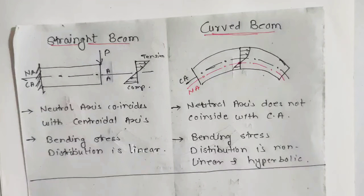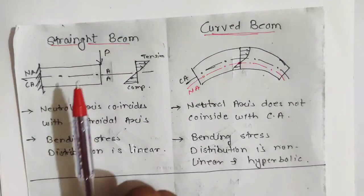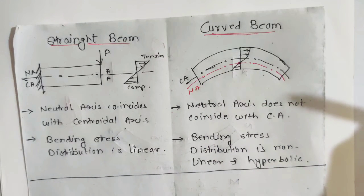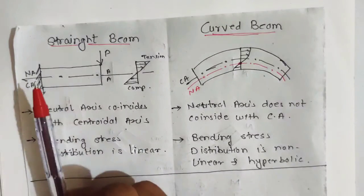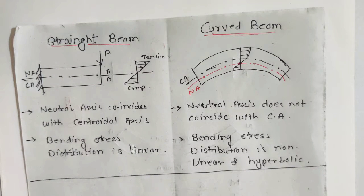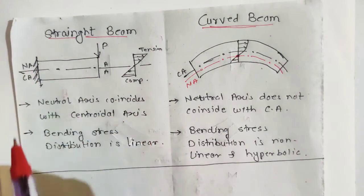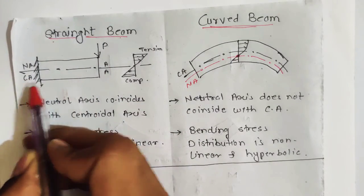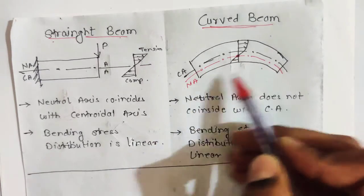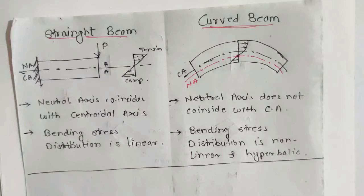Now we will see the differences between a straight beam and a curved beam. The first difference is the definition itself: in a curved beam, the neutral axis in the unloaded condition is curved. The second difference is regarding the two axes — the neutral axis and the centroidal axis. In a straight beam, the neutral axis and centroidal axis coincide with each other, whereas in a curved beam they do not coincide.